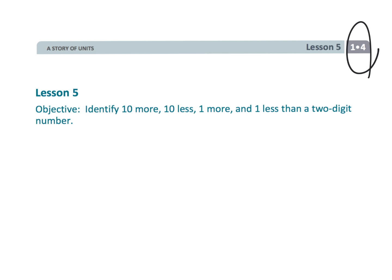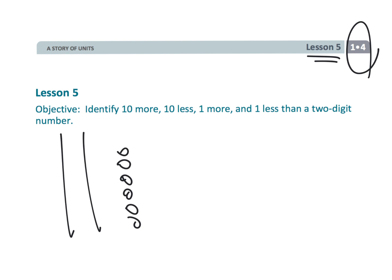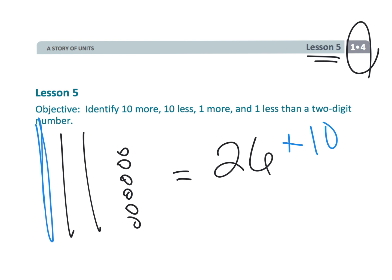That wraps up first grade module four, lesson five, where we're now using quick tens and quick ones to represent numbers. If we wanted to add by ten, we would simply add another ten, and we now suddenly have thirty-six. That's the idea of this lesson.